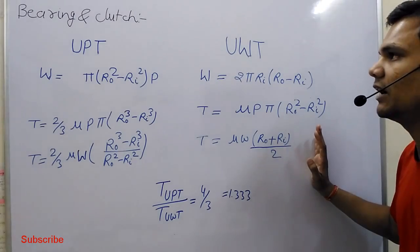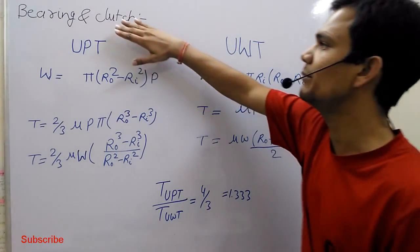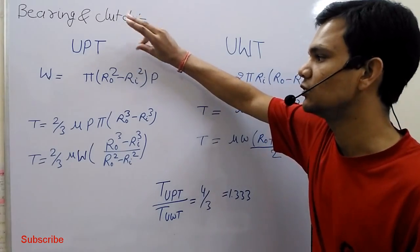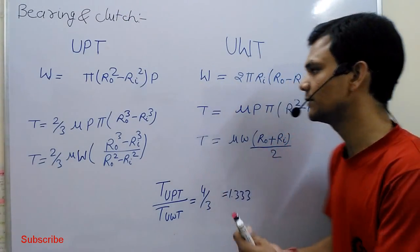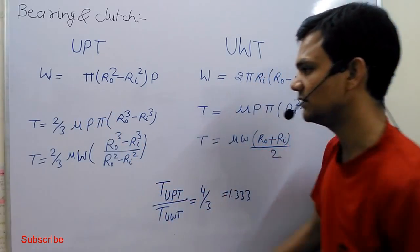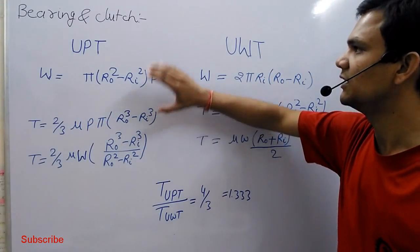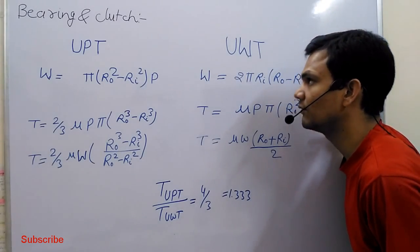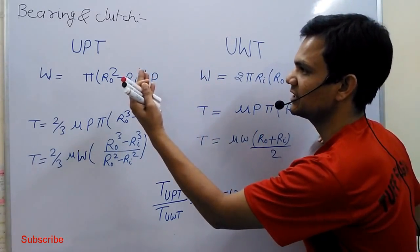In bearing and clutch, two types of theories are generally used. The main concern of the clutch is to transmit the power. If we design the clutch by uniform pressure theory, it can burn. So generally we prefer uniform wear theory for the clutch and uniform pressure theory for the bearing.